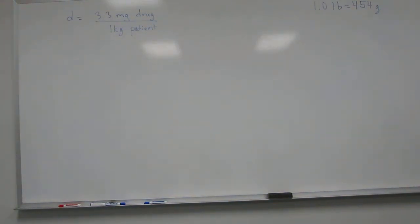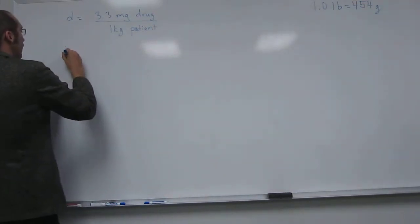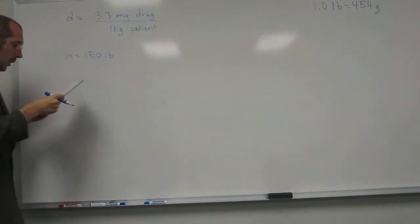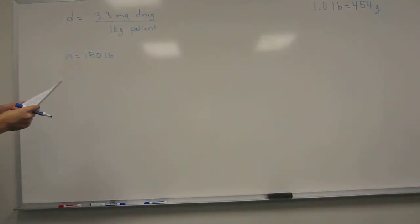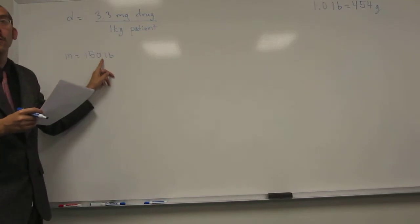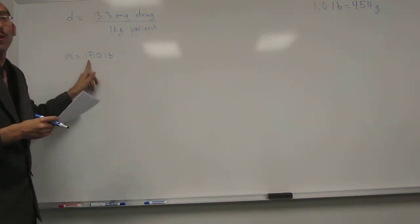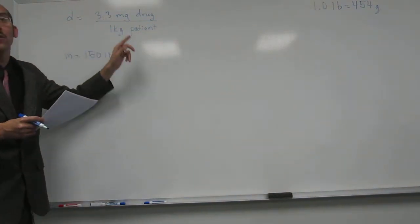Then it says that the patient weighs 150 pounds. So, the mass of the patient is 150 pounds. One thing you want to notice here is that there's no decimal point after the 150, right? So, this is 2 sig figs, and this is 2 sig figs.